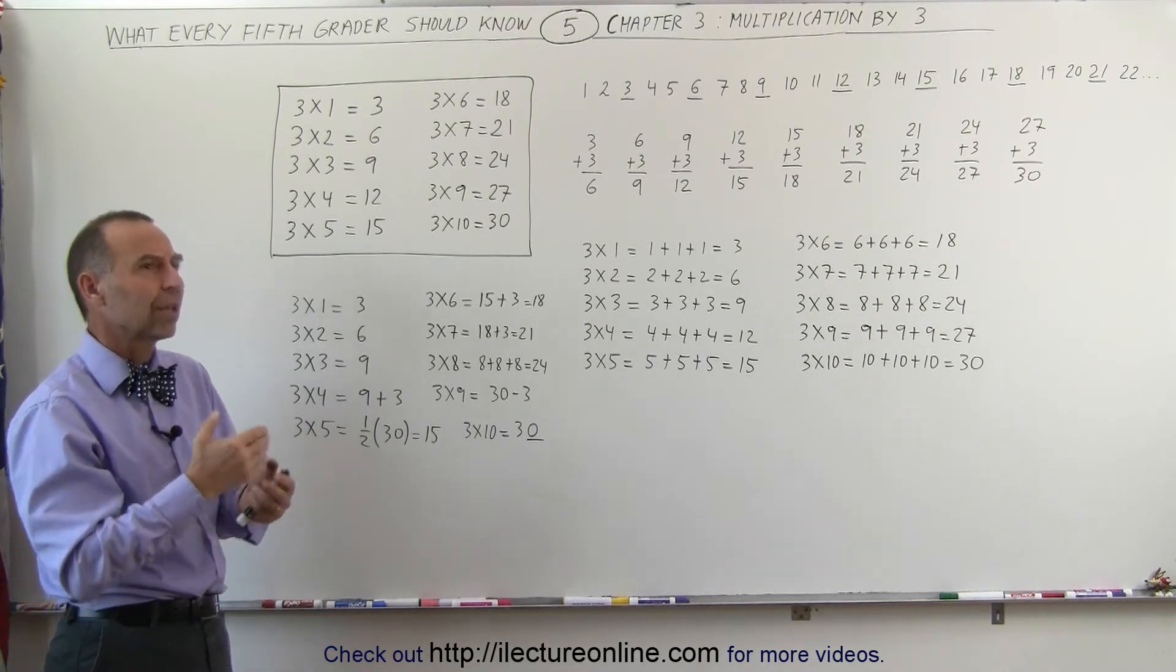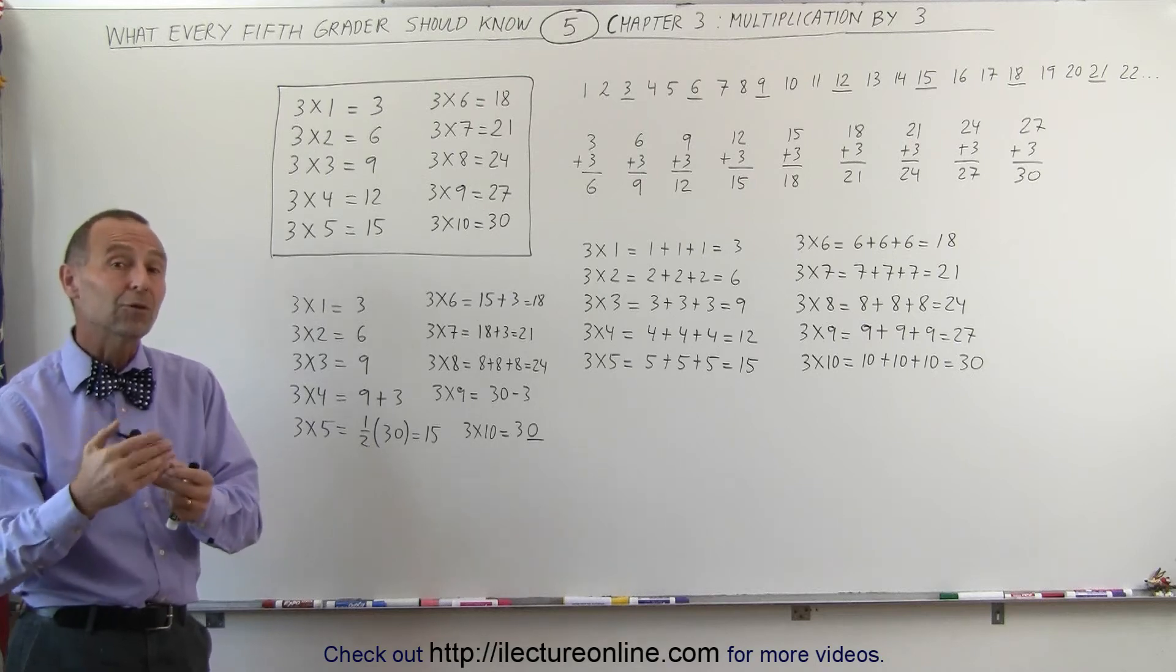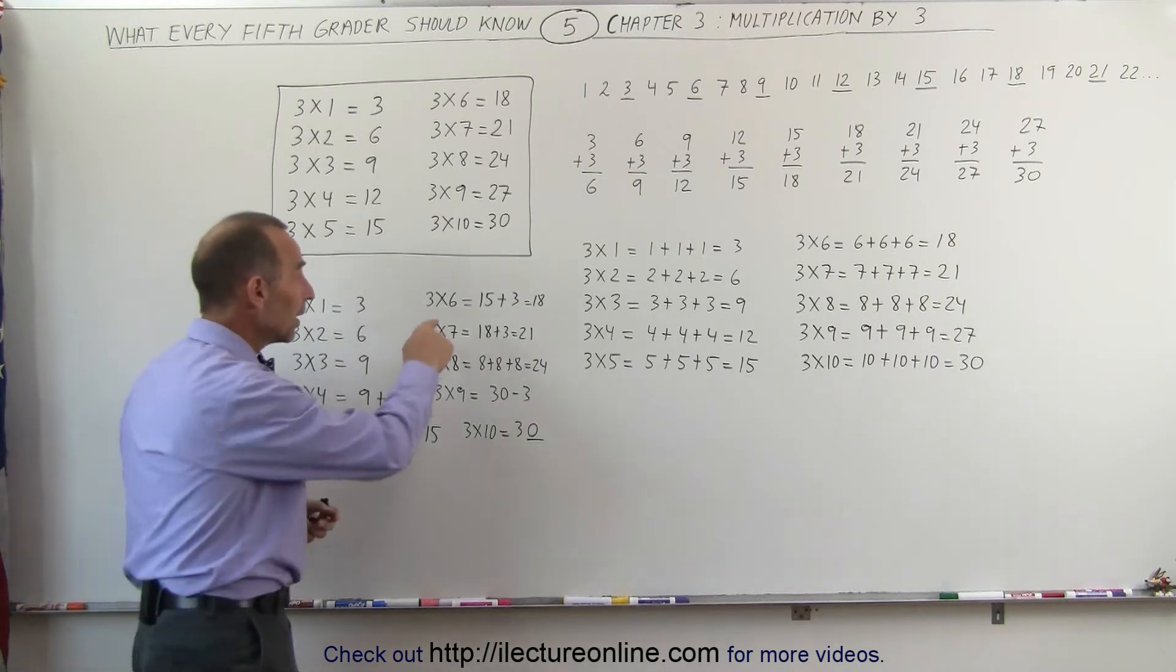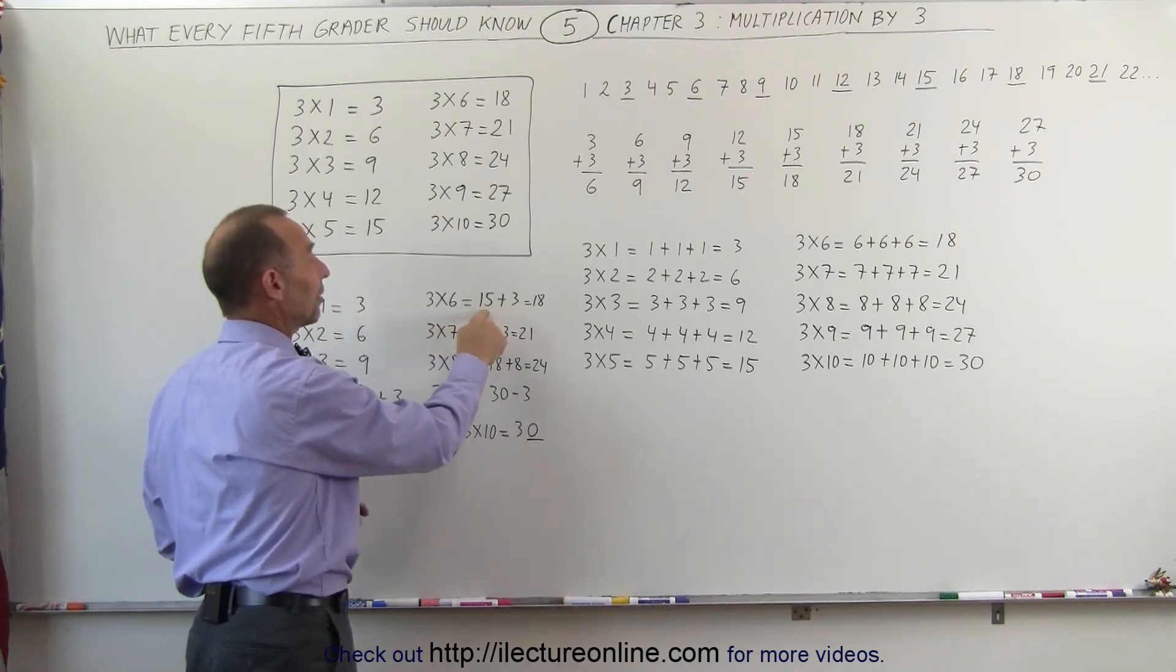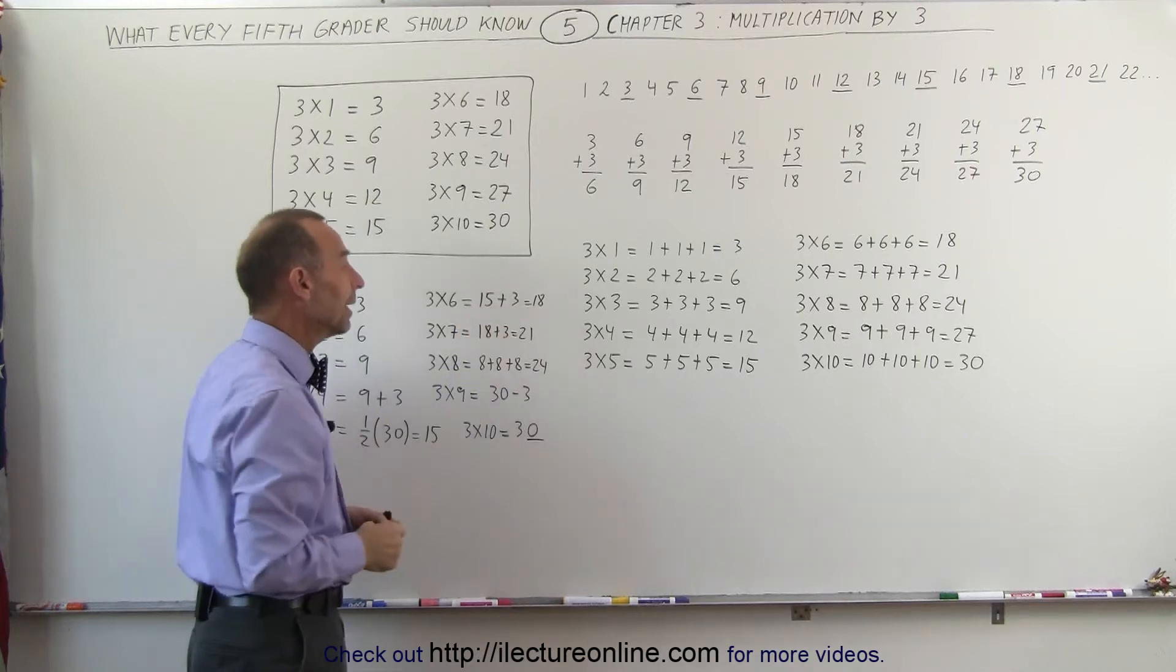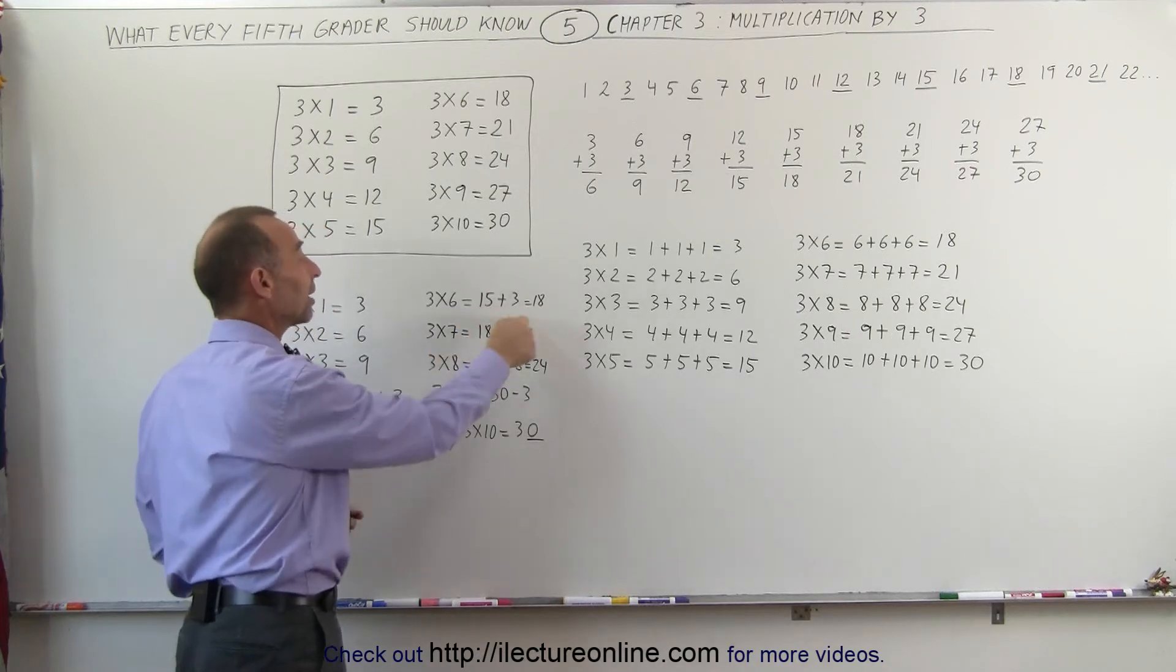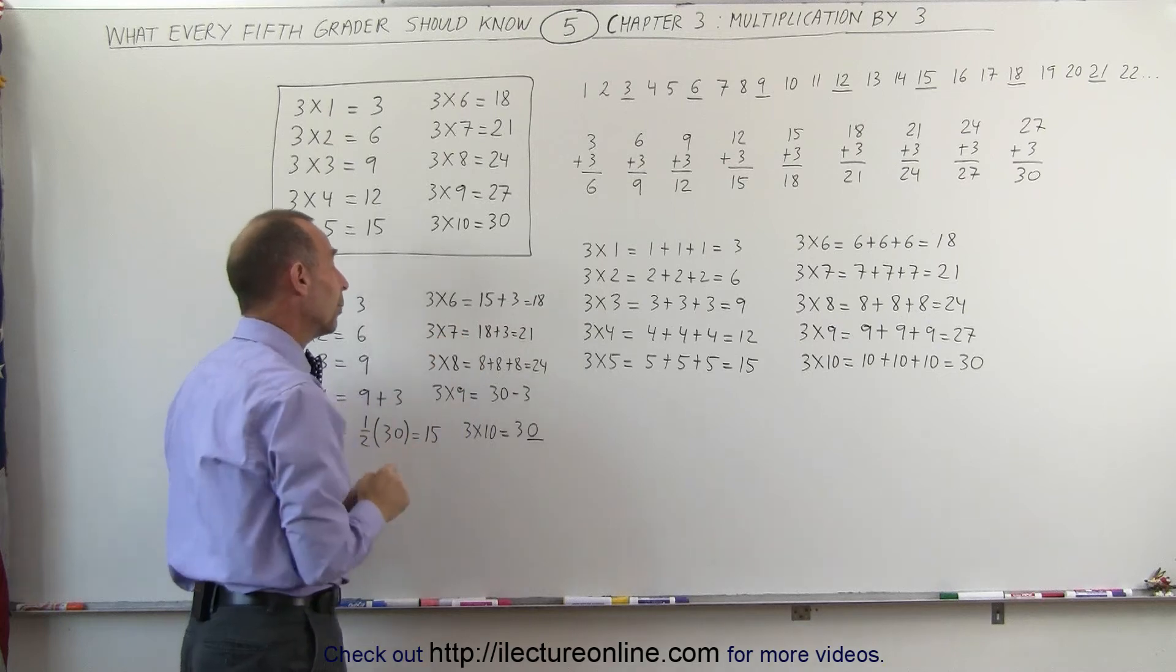So 3 times 10 is 30, and divide by 2 you get 15. 3 times 6 is the halfway answer, 15, add 3 to it, you get 18. And 3 times 7, you get the previous answer, add 3, you get 21.